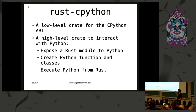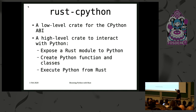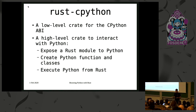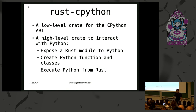Just before I joined, the Mercurial project chose to use rust-cpython, because there are many ways of bridging Python and Rust, and rust-cpython is the one they chose. It compiles on Rust stable. It's composed of two crates: a low-level crate for binding to the CPython ABI, which you would never interact with directly, and a high-level crate to expose modules that look like Python modules — creating functions, classes, and executing Python from Rust via an eval function.